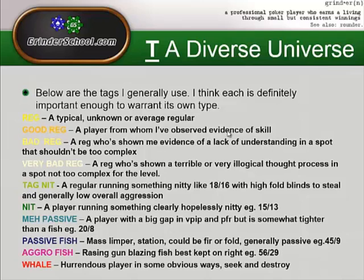I tend to tag regs by how much I would like to play against them, not by the type of reg they are. A Good Reg is orange — a player from whom I've observed evidence of skill. It doesn't need to be someone amazing; sometimes if they've done something seriously impressive I don't even notice. A Good Reg is someone who has understood a spot well enough to take a line that's impressed me, or when reviewing hands in my database I've seen them play really solidly — I agree with all the plays they've made and identified an element of skill.